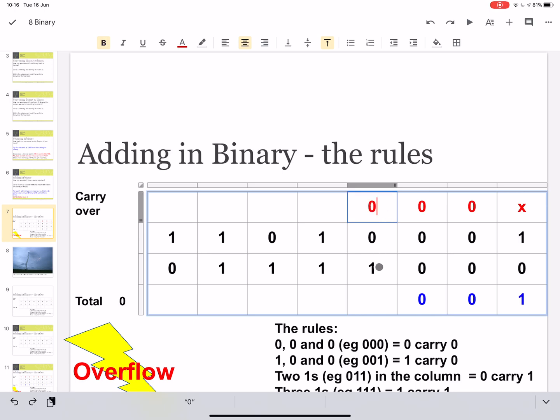Same as the first column here, we've got 1, 1, and 2 0s. So 1, 1, 2 0s. So we do 1 in the total and we carry 0.